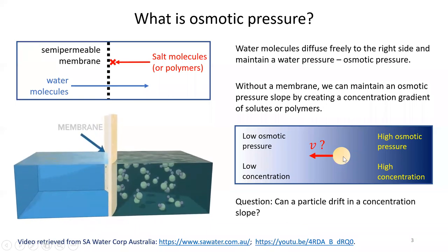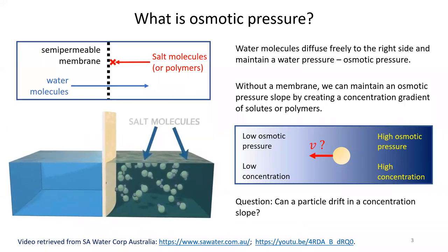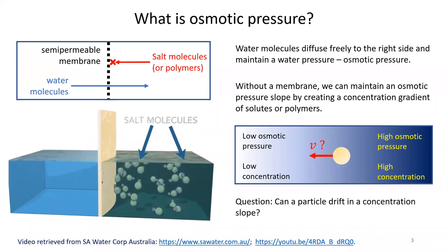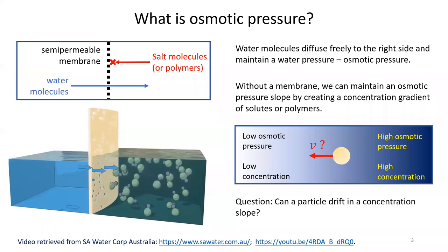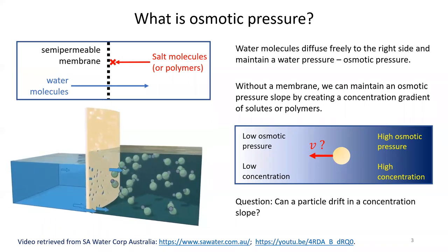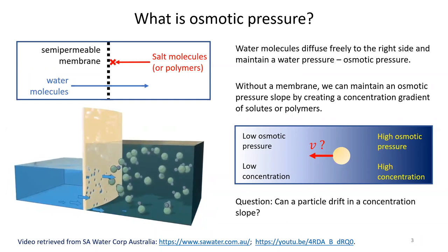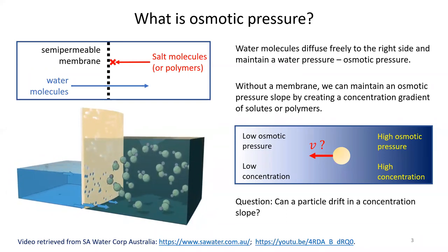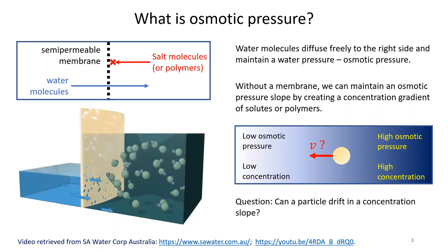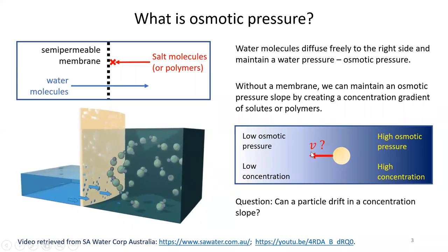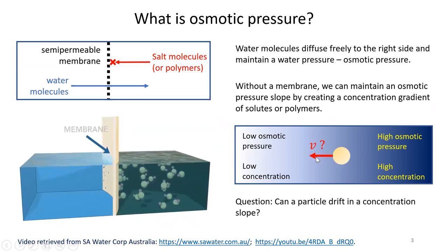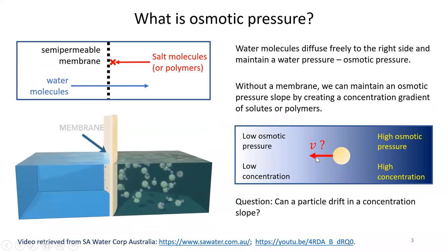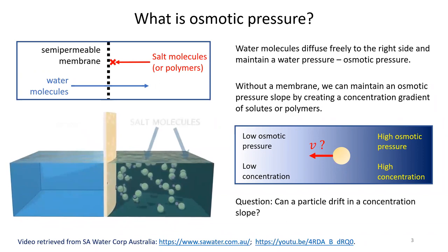Now I'm going to remove the membrane and replace it with a particle. Under the osmotic pressure gradient, can the particle drift? The reason we ask this question is that osmotic pressure is the result of water diffusion — it's not a real collision on the particles. So if it's not a collision and we put a particle there, maintaining osmotic pressure via a salt or polymer concentration gradient, can the particle drift? This is the question: can the particle drift in a concentration gradient?